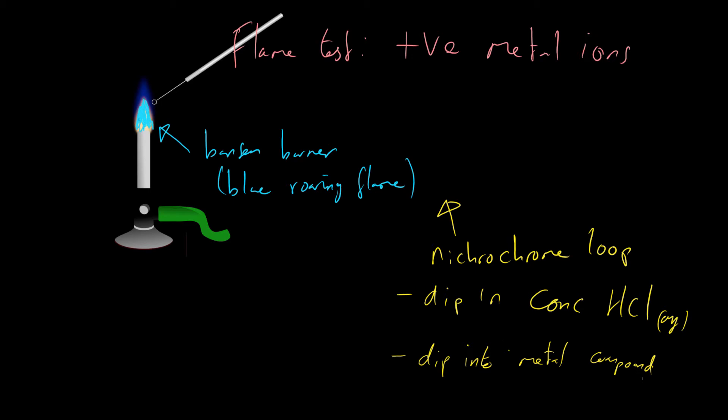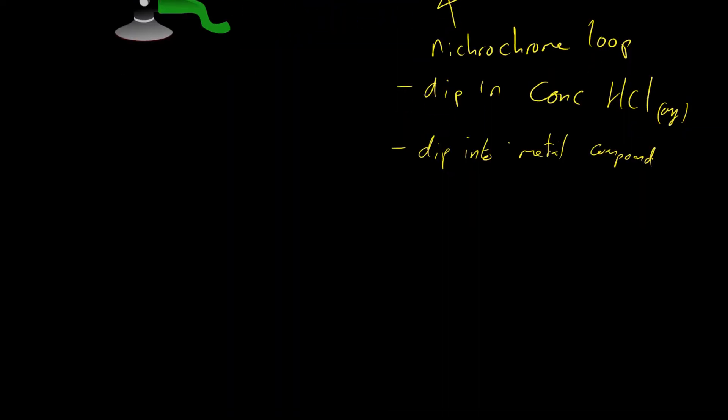As an example, if we have barium, the flame turns green. So if on this loop we have barium ions, we would get a green flame instead of our blue flame from the Bunsen burner. Let's summarize the metal ions and their colors.